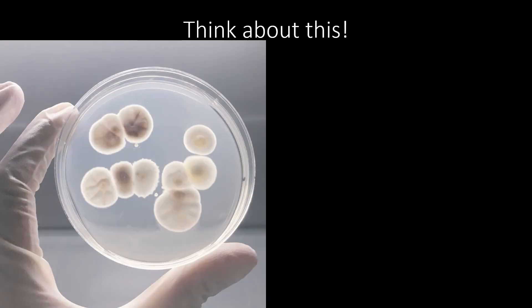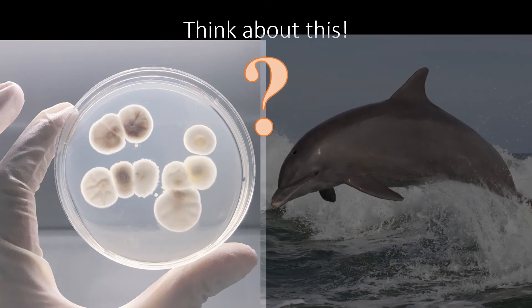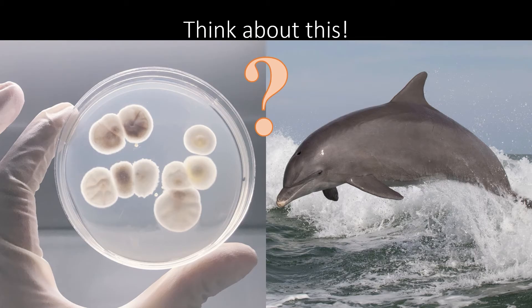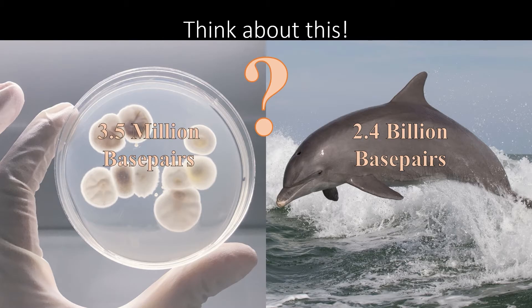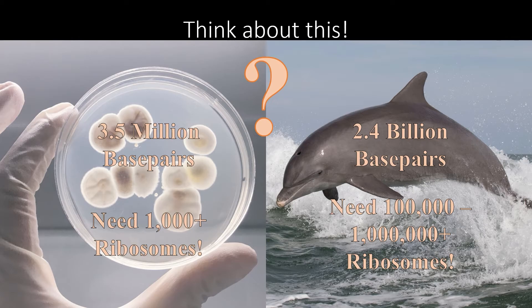Let's take a quick break and do a thought experiment. These are bacterial cells growing on an agar plate. This is a bottlenose dolphin. Both of these organisms have ribosomes. Which organism do you think has more ribosomes per cell? If you said dolphin, you're right. Dolphins and all other eukaryotic organisms have more ribosomes per cell for one very simple reason: they have more DNA. Dolphins have roughly 2.4 billion base pairs, whereas a bacterial genome contains only 3.5 million base pairs. Bacteria typically only need thousands of ribosomes in each cell. With all that extra DNA, dolphins and other eukaryotes need hundreds of thousands to millions of ribosomes in their cells to create all of the proteins their genomes need to produce.